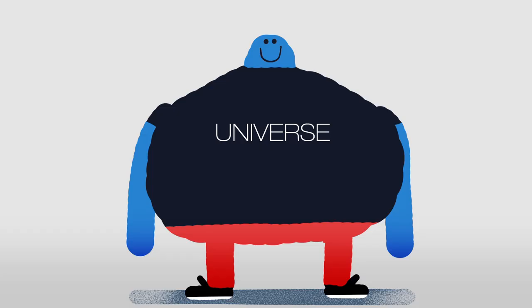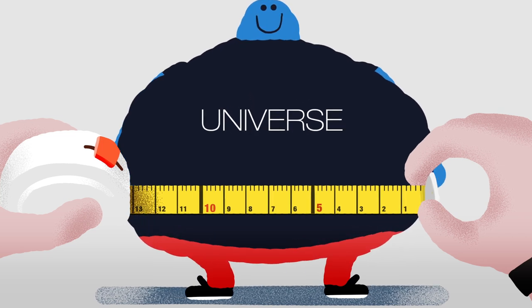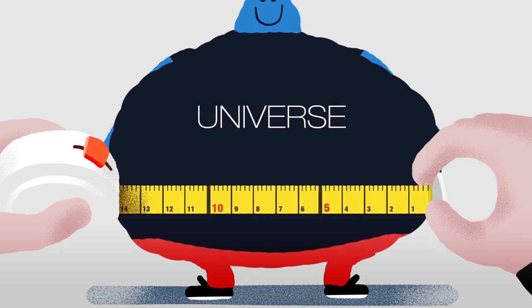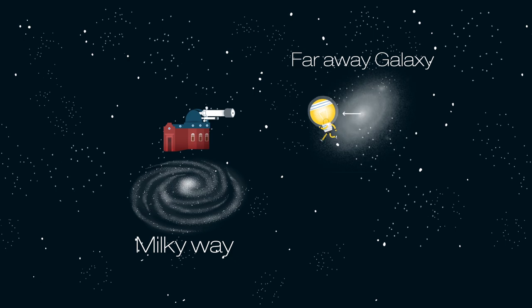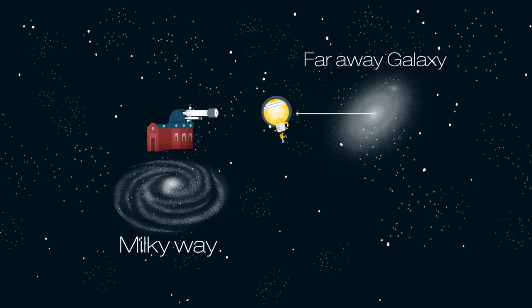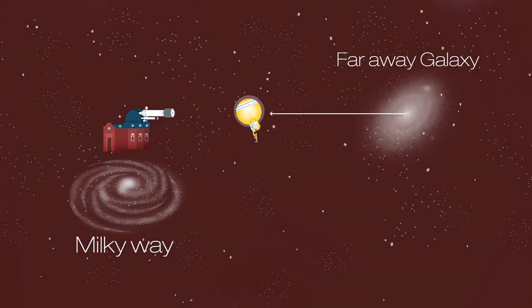So does this mean that the universe is 13.8 billion light years big? The answer is no. When light first left a faraway galaxy, it was much closer to us, but over time, the universe has expanded like a huge balloon. So the light has taken longer to reach us.